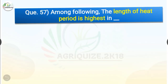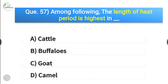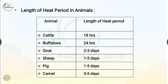Question number 57. Among the following, the length of heat period is highest in dash. The options are cattle, buffaloes, goat or camel. The correct answer is option D, camel. So the length of heat period is highest in camel. In cattle it is 18 hours; in buffalo it is 24 hours; in goat it is 2 to 3 days; in sheep it is 1 to 3 days; in pig it is 1 to 5 days; and in camel it is 3 to 5 days.